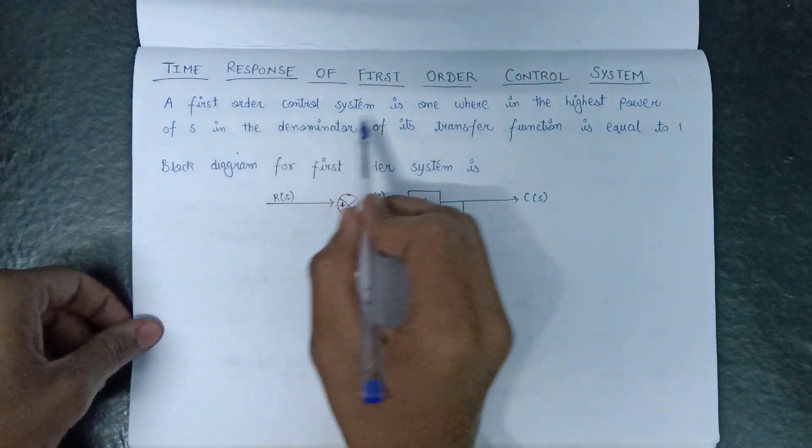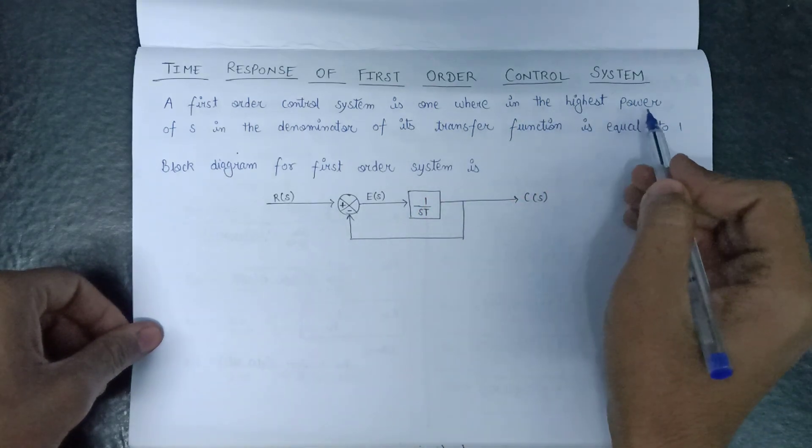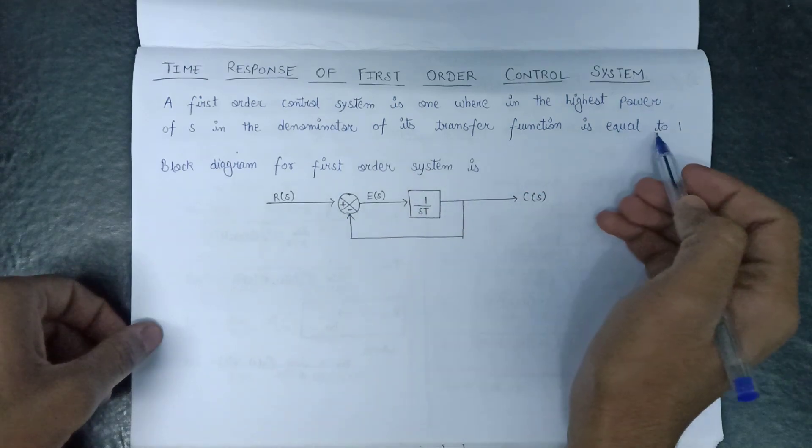A first order control system is one where the highest power of s in the denominator of its transfer function is equals to 1.